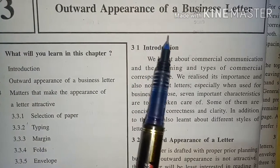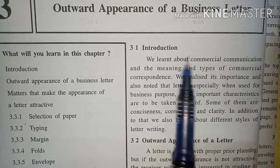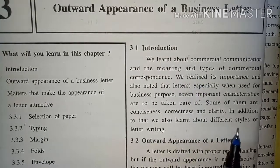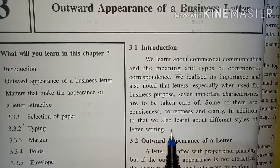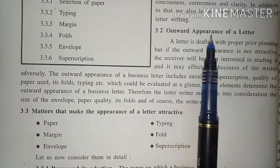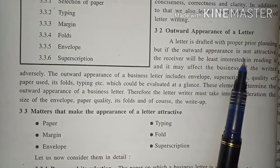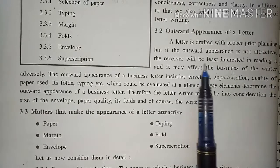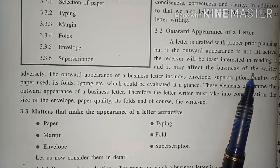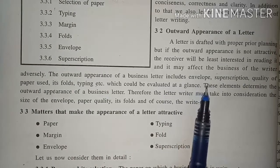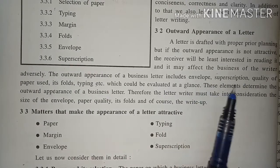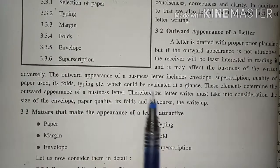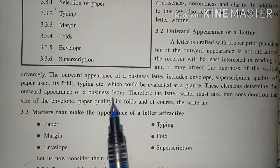Chapter 3: Outward Appearance of Business Letters. We learned about commercial communication, its meanings and types, and different styles of letter writing. Now let us learn the outward appearance of a letter. If the outward appearance is not attractive, the receiver will be least interested in reading it, and that is going to affect our business. Here we include envelope, superscription, quality of paper, its folds, typing, etc. So we have to take all these things into consideration.